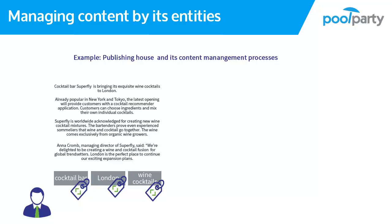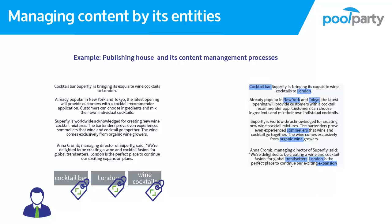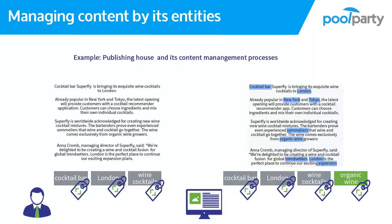To solve this problem we have to move away from thinking in documents described by subjective keywords, and instead manage documents in regards to the entities they include. For that, the author needs machine-supported metadata recommendations. Machines will analyze the text and recognize entities based on context and relations, so that the article will also surface in a search about organic business models.